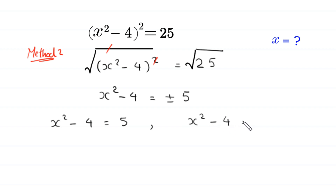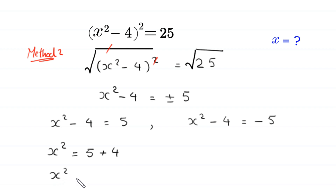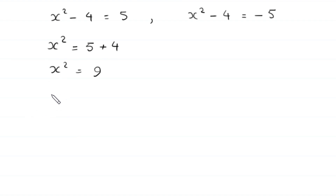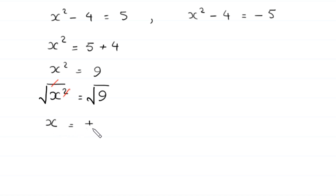From x² - 4 = ±5, either x² - 4 = +5 or x² - 4 = -5. From the first case, x² = 5 + 4 = 9. Taking the square root of both sides gives x = ±3, so x₁ = 3 and x₂ = -3.